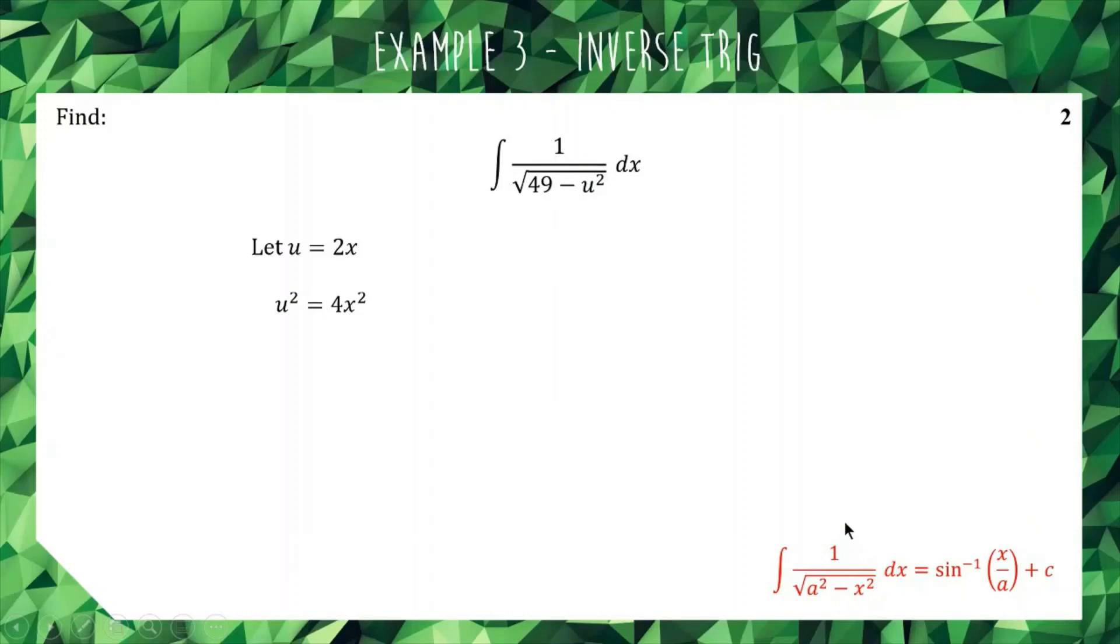The obvious problem with that is that now we have a variable u and we're trying to integrate with respect to x. So we need to fix that. As we usually do, we go to our substitution u = 2x, and we take du/dx, which is equal to 2. Now we rearrange that to make dx the subject. We just multiply the dx across, and then we divide the 2 under, and we get du/2 = dx. So now we can change dx in our question to du/2.